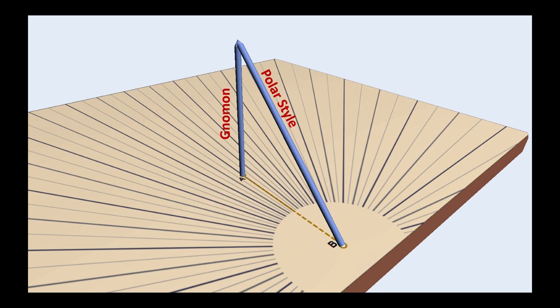The gnomon is installed perpendicularly to the plate at point A, which is the center of the layout. The polar style casts its shadow on an hour line. It is installed at point B, where all hour lines converge.